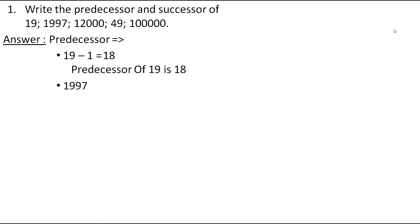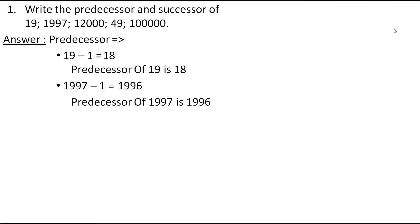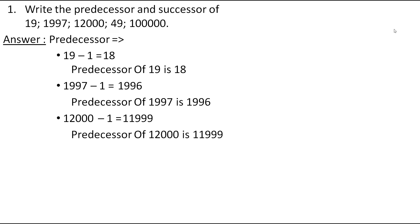The next number is 1997. Subtracting 1, we get 1996. Therefore, the predecessor of 1997 is 1996. Next comes 12,000. Subtracting 1, we get 11,999. Therefore, the predecessor of 12,000 is 11,999.